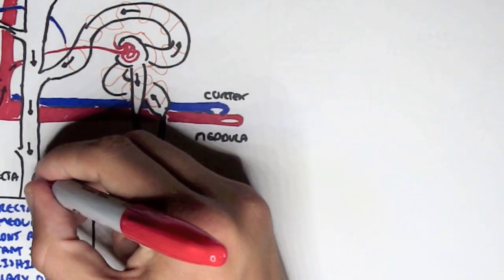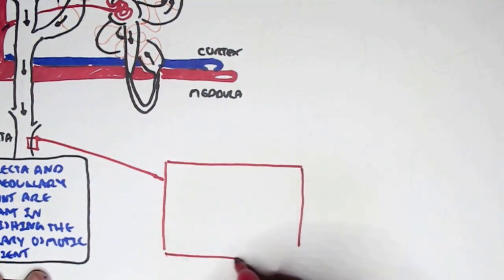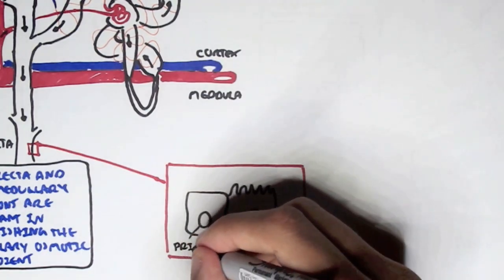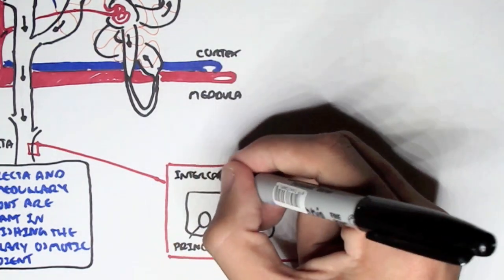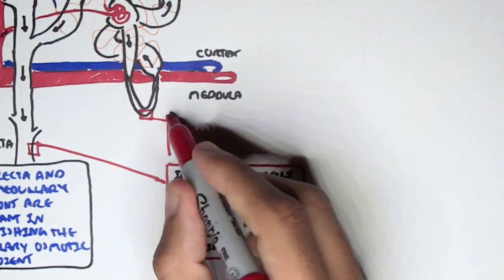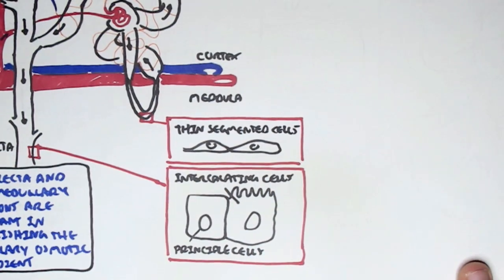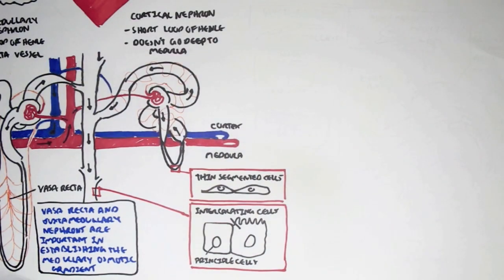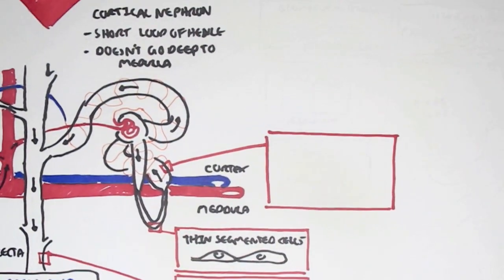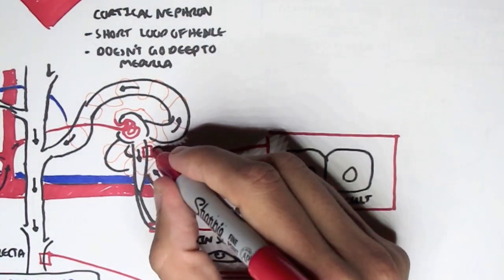Now we can look at the different types of cells all along the nephron. Beginning with the collecting duct, it consists of two types of cells mainly: the cuboidal cells - the principal cells - and the intercalated cells. The loop of Henle has thin segmented cells which are sort of epithelial-like cells, which are very good for reabsorption and secretion. The distal convoluted tubules consist of just regular cuboidal cells, which can also perform reabsorption and secretion.